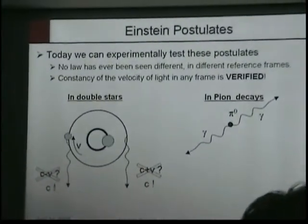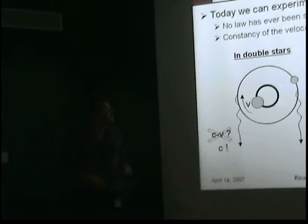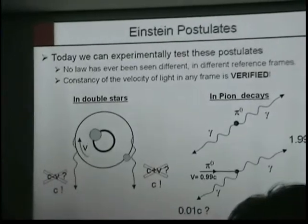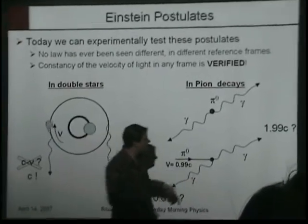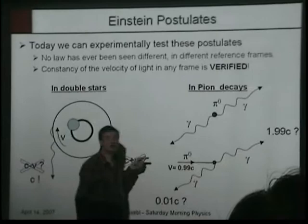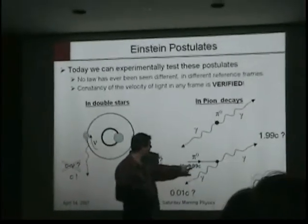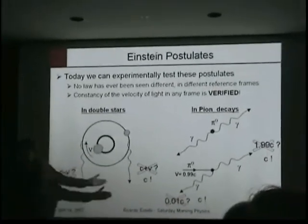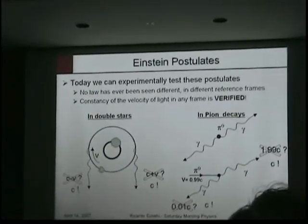Another verification comes from pion decays. Pions are particles that decay into two photons. At rest, you see two photons going in opposite directions. But we can accelerate pions to 99% the velocity of light. Then one photon goes forward and one goes backward. The question is whether the forward photon travels at the pion's velocity plus the velocity of light, and the backward one at the pion's velocity minus the velocity of light. The answer is no — we measure the velocity and the speed of light is the same in both cases. This is a huge verification of Einstein's postulates.